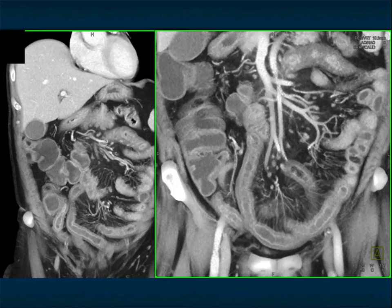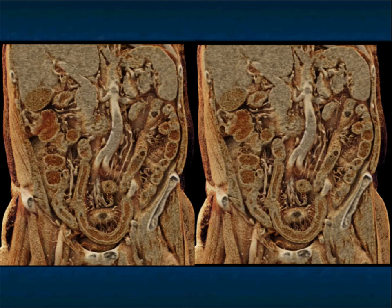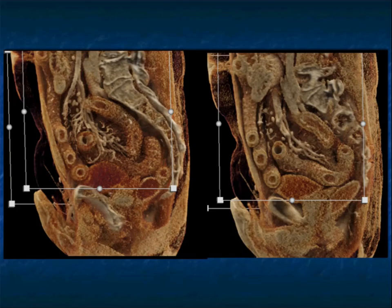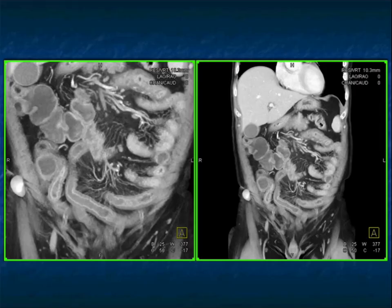Could this be infectious? You think about things like salmonella, which involves the ileum, but it really doesn't look like this. Could it be ischemia? You look at the vessels — they look too good, beautifully shown on the cinematic rendering. What gives you very long segments of bowel involvement, extensive mucosal enhancement, target sign? What should we be thinking about?